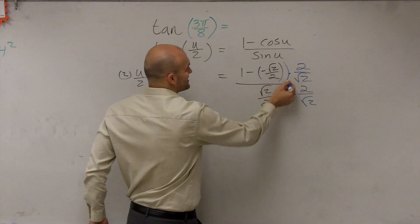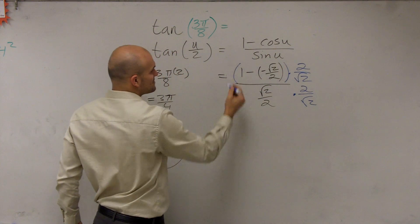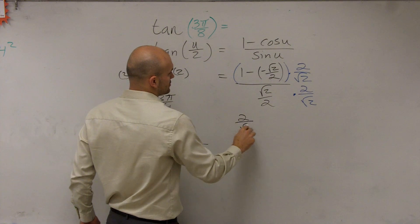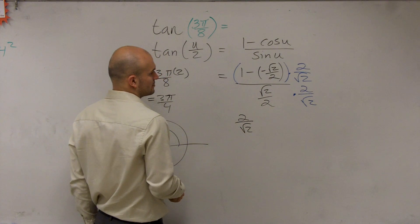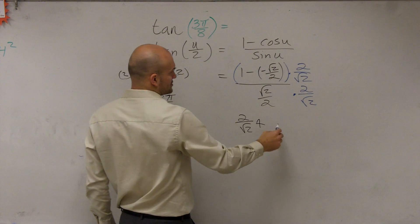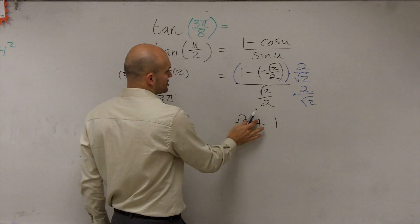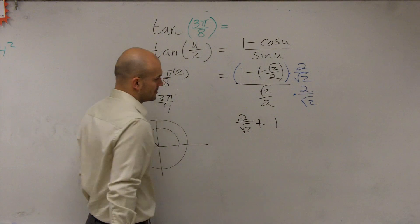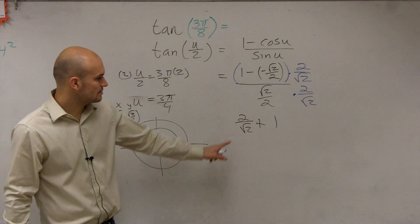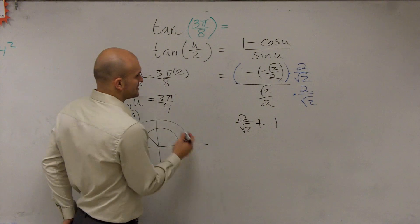So now let's go ahead and distribute. So 2 times 1 is going to leave you with 2 over square root of 2. And then plus, these are going to cancel out. So that would just cancel out or divide into 1. Now what we can do is rationalize our denominator.